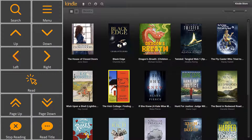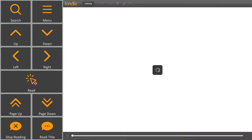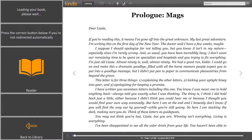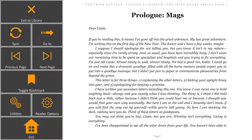When you find the book you want to read, use the Read button to open the book and start or resume reading. Now you have a new set of reader control buttons that allow you to sync your reading progress with other devices, navigate to certain locations in the book, and add or remove a bookmark.